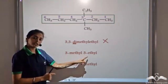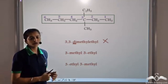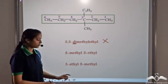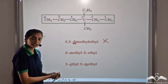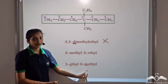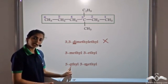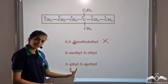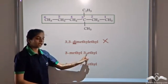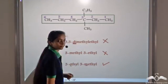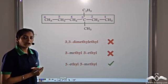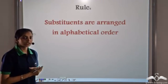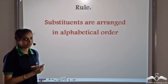Now we have 3-methyl-3-ethyl and 3-ethyl-3-methyl — how should we name it? The rule given by IUPAC says that when we have two or more substituents, we take the first letter of the substituents and arrange them alphabetically. So in this case, the first letter of ethyl is E and the first letter of methyl is M. Arranging alphabetically, we first have ethyl and then methyl. So 3-ethyl-3-methyl is correct. Whenever we have two or more substituents, we always arrange them alphabetically — this is the IUPAC rule.